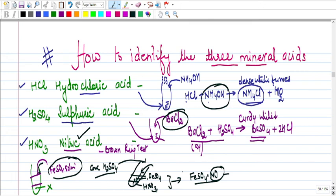What do you get? You get nitrosoferrous sulfate brown color ring. The moment you shake the test tube, this brown color ring disappears. Why? Because nitrosoferrous sulfate is a weak, unstable compound and with shaking it breaks.